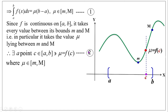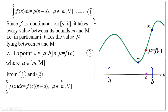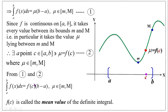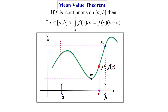From equations 1 and 2, we replace the value of μ by f(c) in equation 1. Therefore equation 1 becomes: the integral from a to b of f(x) dx equals μ, and since μ equals f(c), we get the integral from a to b of f(x) dx equals f(c)(b−a), where c belongs to [a, b]. Here, f(c) is called the mean value of the definite integral. Therefore, this theorem is called the Mean Value Theorem.